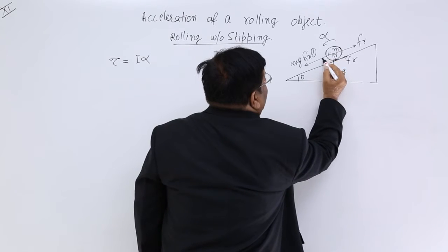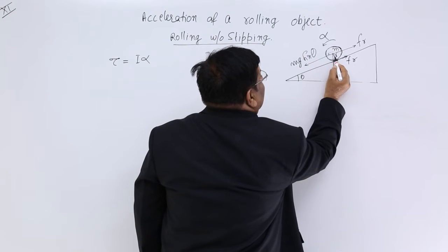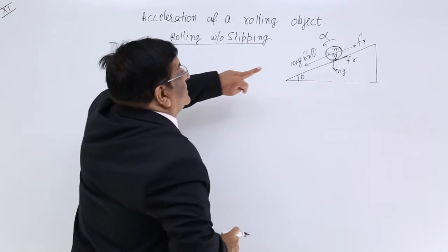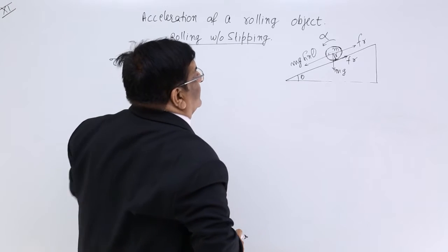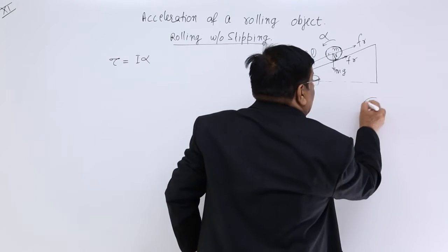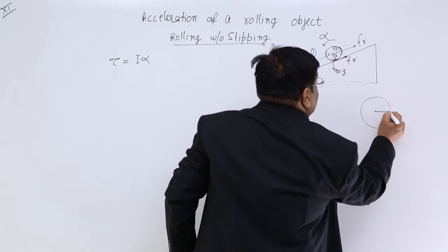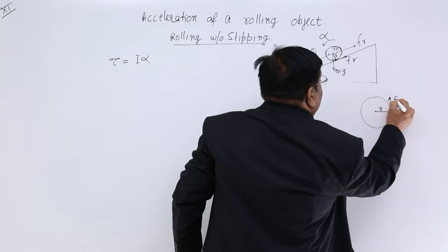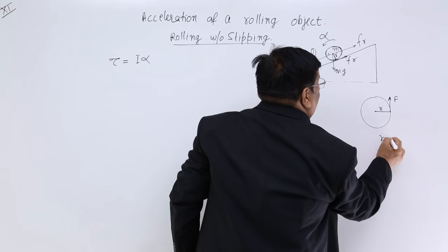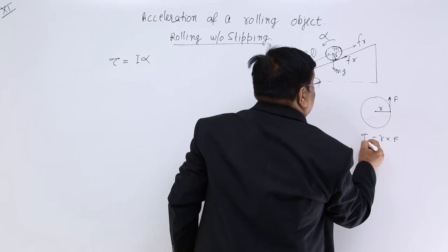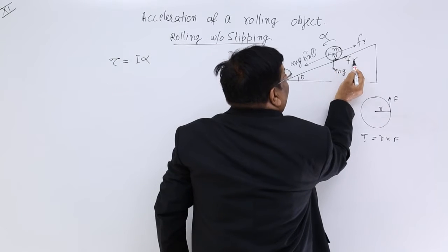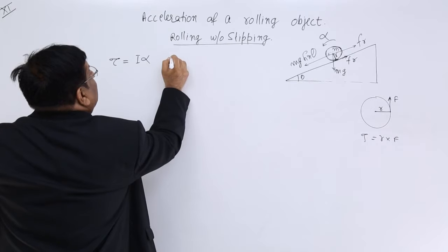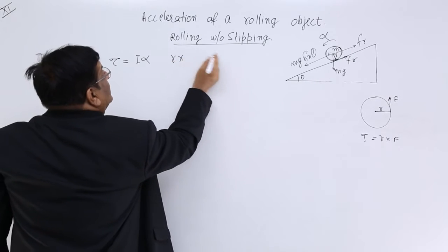The contact point is where friction is applied, and the radius of rotation is R. For a circle of radius R with a force F applied at the rim, the torque is R into F. So the torque here is R into friction.